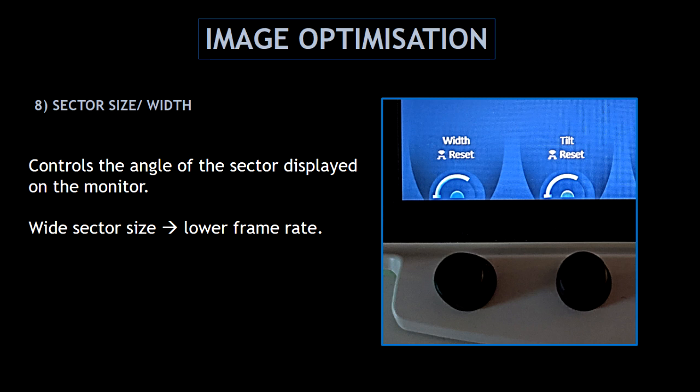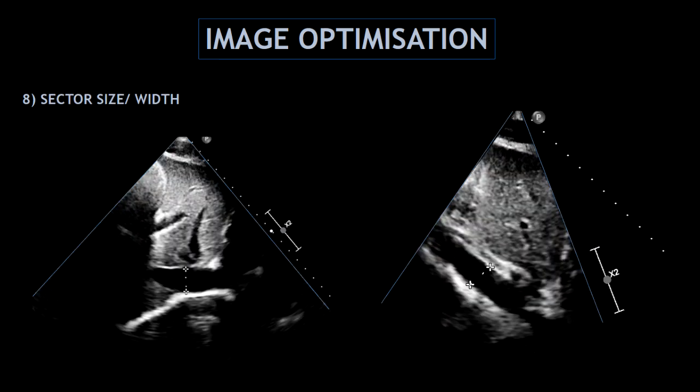Another feature to optimize the image is the sector size or width. This controls the angle of the sector displayed on the monitor. The wider the sector size, the lower the frame rate, affecting image quality. We can normally find these features on the lower part of the screen. Here I'm showing how I adjust the sector size during the scan — on the left side, I'm measuring the inferior vena cava and I like to increase the sector size; on the right side, I'm measuring the diameter of the abdominal aorta and I like to decrease the sector size.